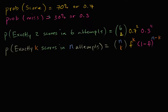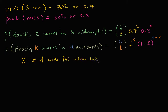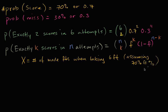Now that we've spent a couple of videos exploring a scenario where I'm taking multiple free throws and figuring out the probability of making k of the scores in six attempts or in n attempts, let's actually define a random variable using this scenario and see if we can construct its probability distribution. We'll actually see that it's a binomial distribution. So let's define the random variable x as equal to the number of made free throws when taking six free throws, assuming a 70% free throw percentage.